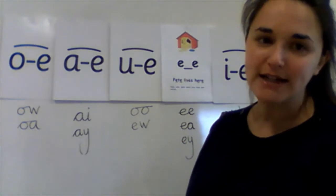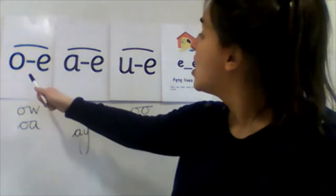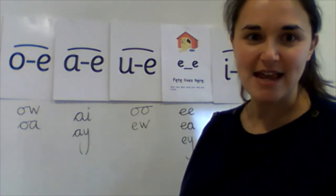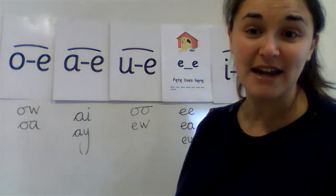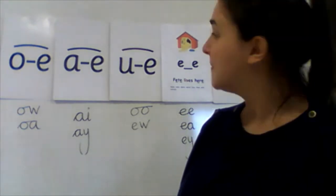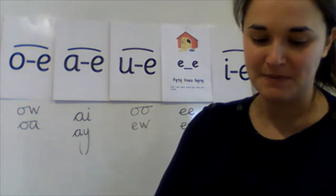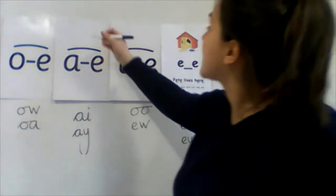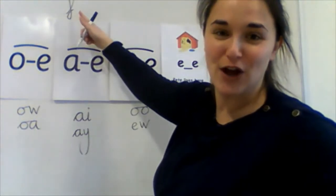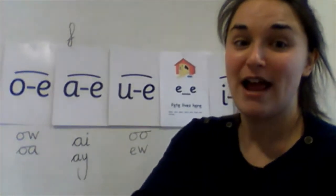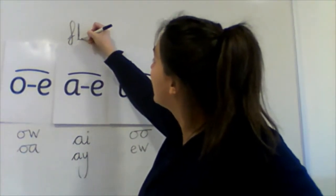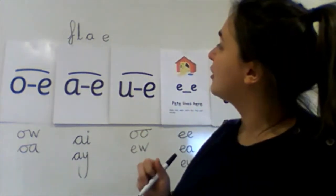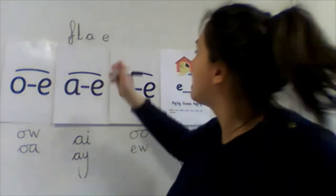I wonder if you could now write some words but the words you're going to write are all going to have these split digraphs in them. Could you write the word flame? Have a go. Get your pen and paper again and just try your best. There was a flame in the kitchen. I can hear the A split digraph sound. F-L-A-M-E. Here is the split digraph. Flame. Come back to the sound in the middle.